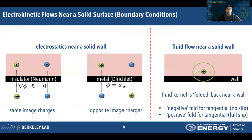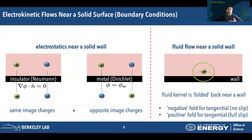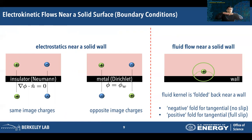We have recently implemented boundary conditions to solve for nanoscale electrokinetic flows in the presence of solid surfaces such as walls. We correctly solve for electrostatics near an insulator, which is a Neumann boundary condition, or a metal, which is a Dirichlet boundary condition, using the method of image charges. We also correctly account for fluid flow near a solid wall by appropriately folding back the fluid immersed boundary kernel near a wall — a negative fold gives a no-slip boundary condition, and a positive fold gives a full-slip boundary condition. A no-slip boundary condition is where the tangential fluid velocity is zero at the wall.